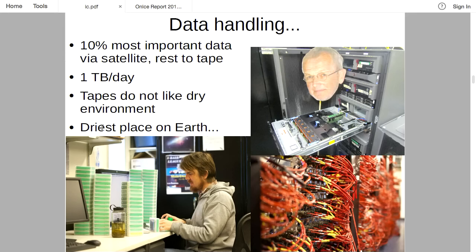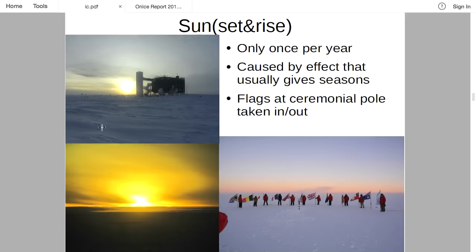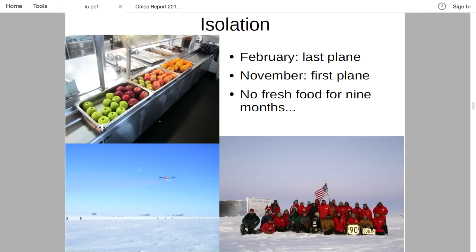In winter they had some pretty severe problems with tapes. The same effect that drives the seasons drives your sunrise and sunset at South Pole — so sunset and sunrise are a big deal. It gets too cold in winter to fly airplanes. About nine months of the year, no planes in or out, so it's just you and 40 other crazy people. A little bit of fresh fruit gets brought down at the last big airplane, but that doesn't last terribly long.